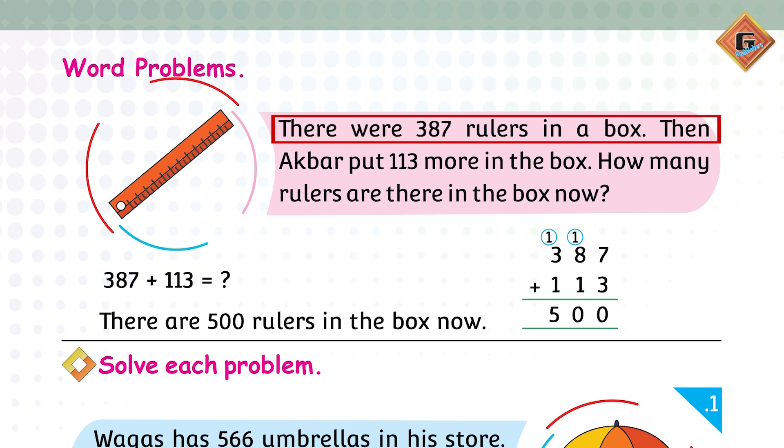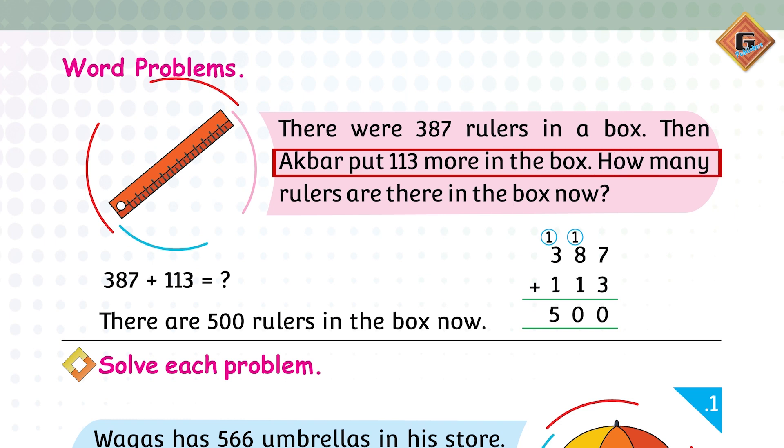The first one is: there were 387 rulers in a box, then Akbar put 113 more in the box. How many rulers are there in the box now? Ek aap ke paas box hai jis mein 387 rulers hai. Akbar ne us mein 113 aur add kiye. Humhe answer dekhna hai ki alright kitne hai.